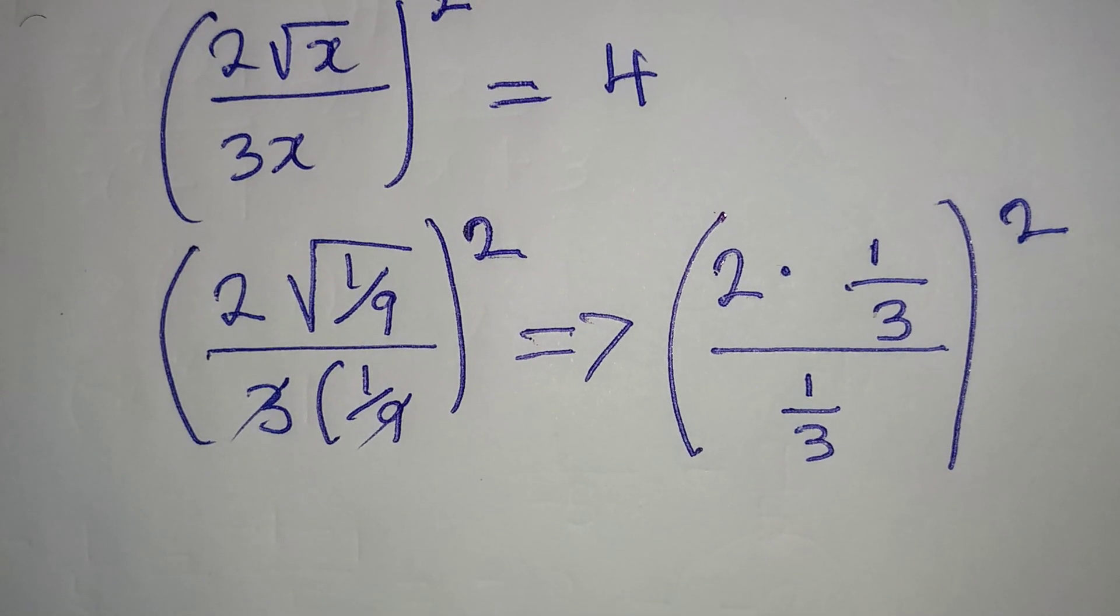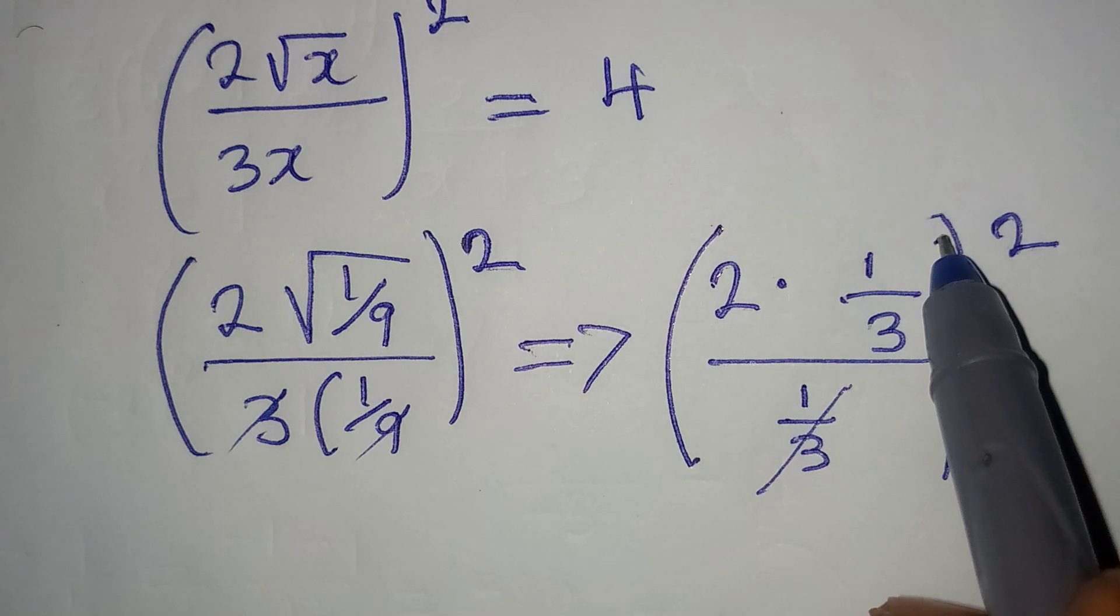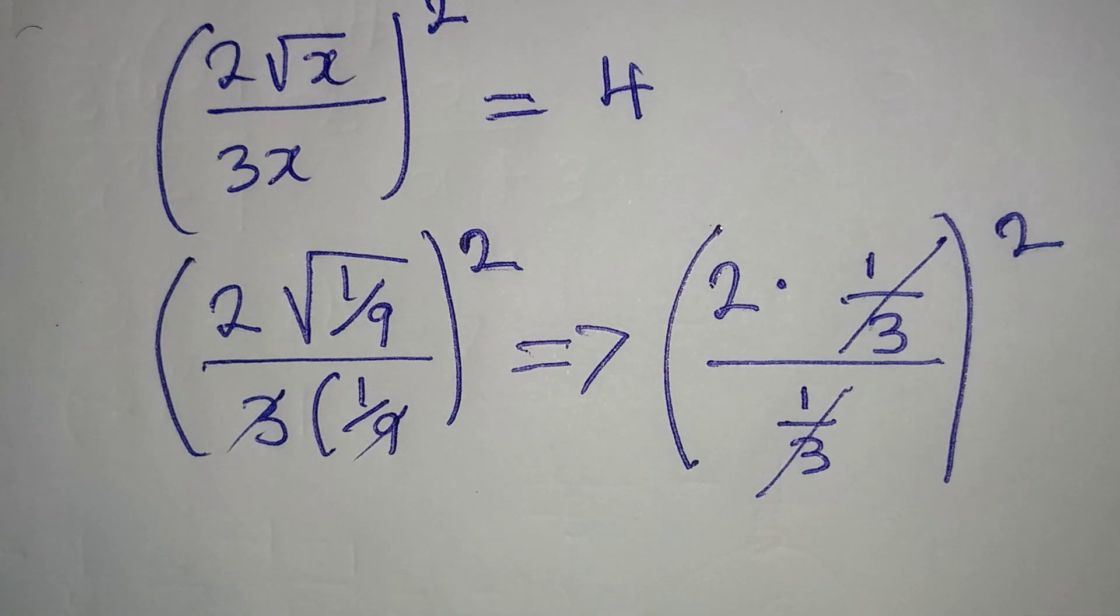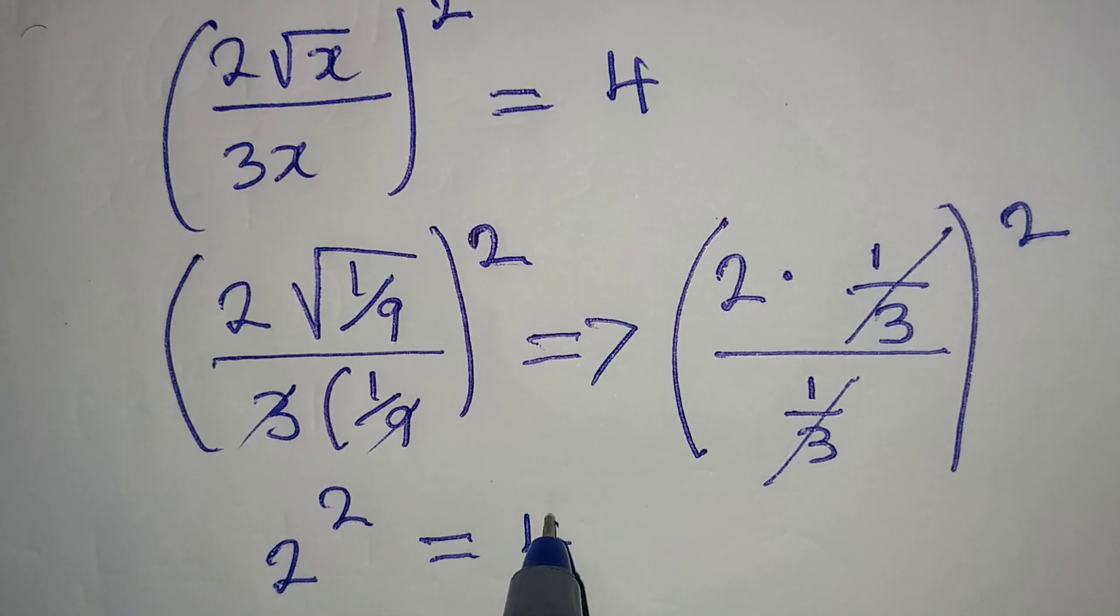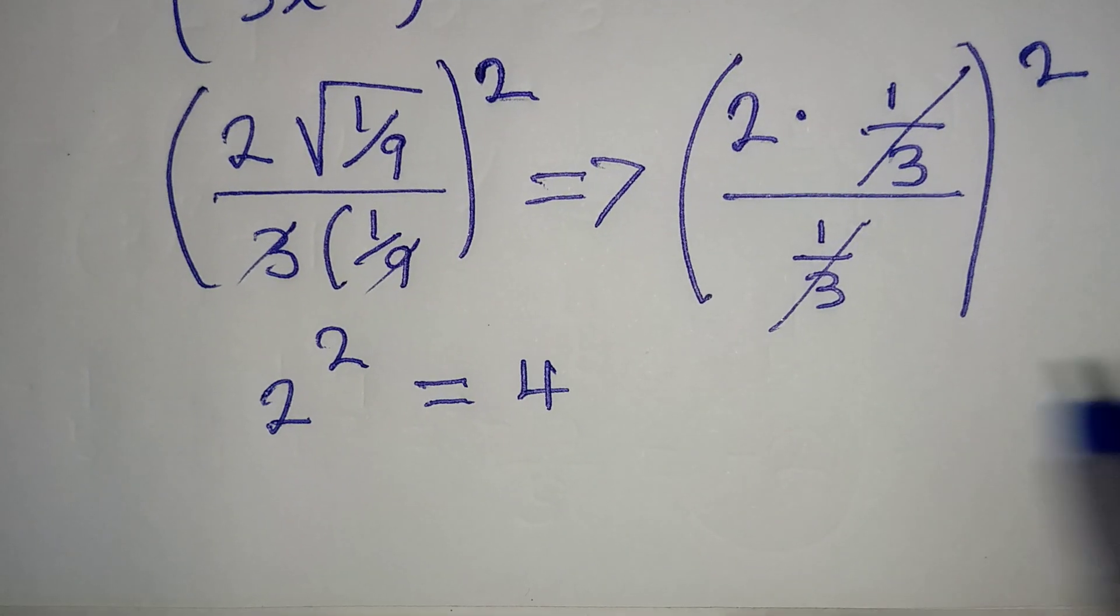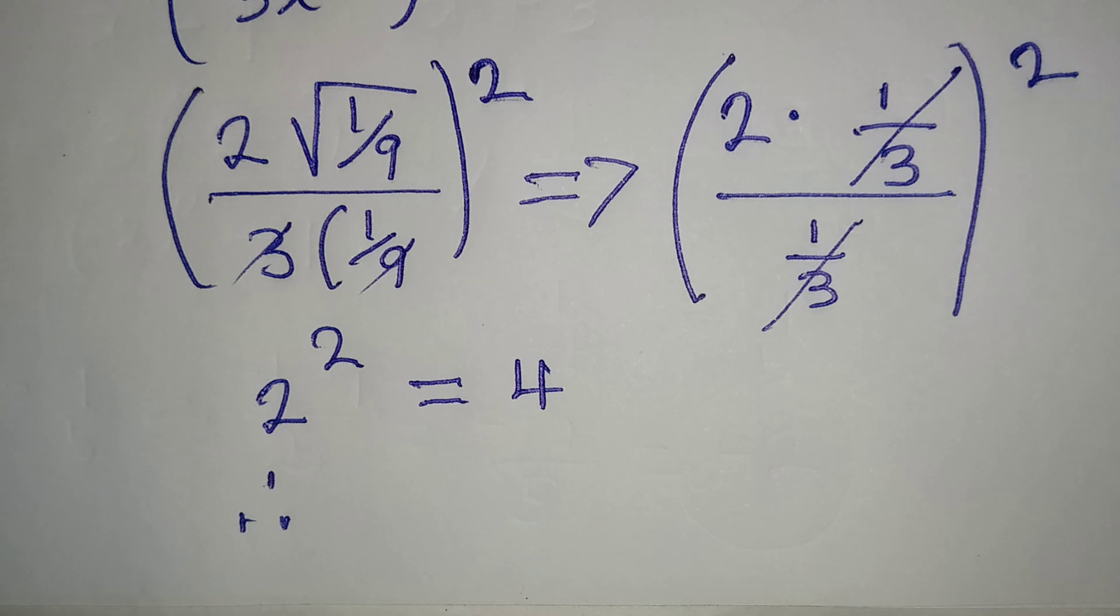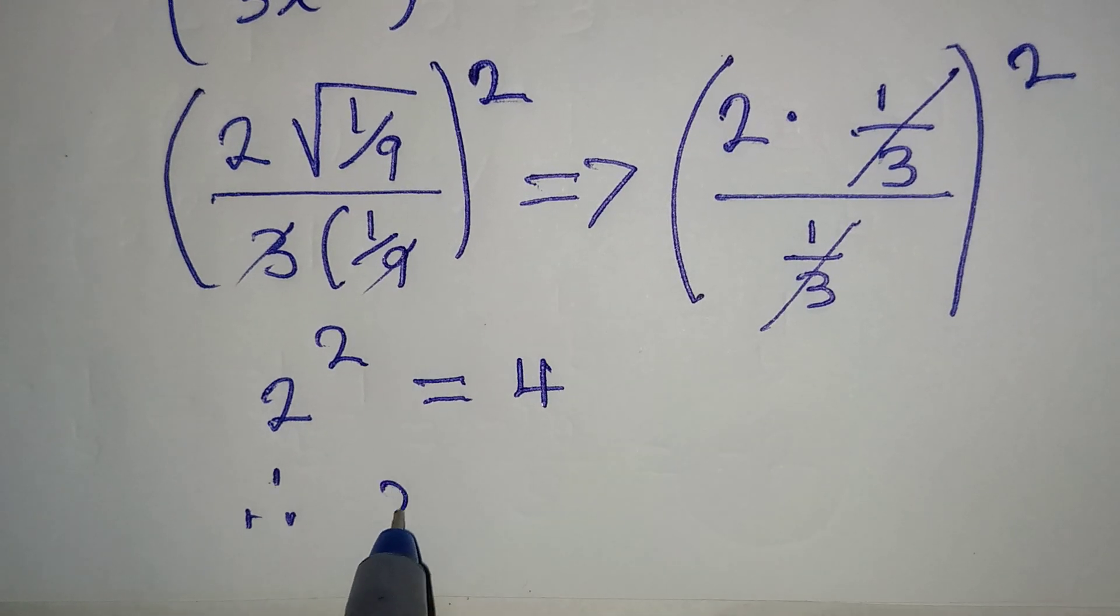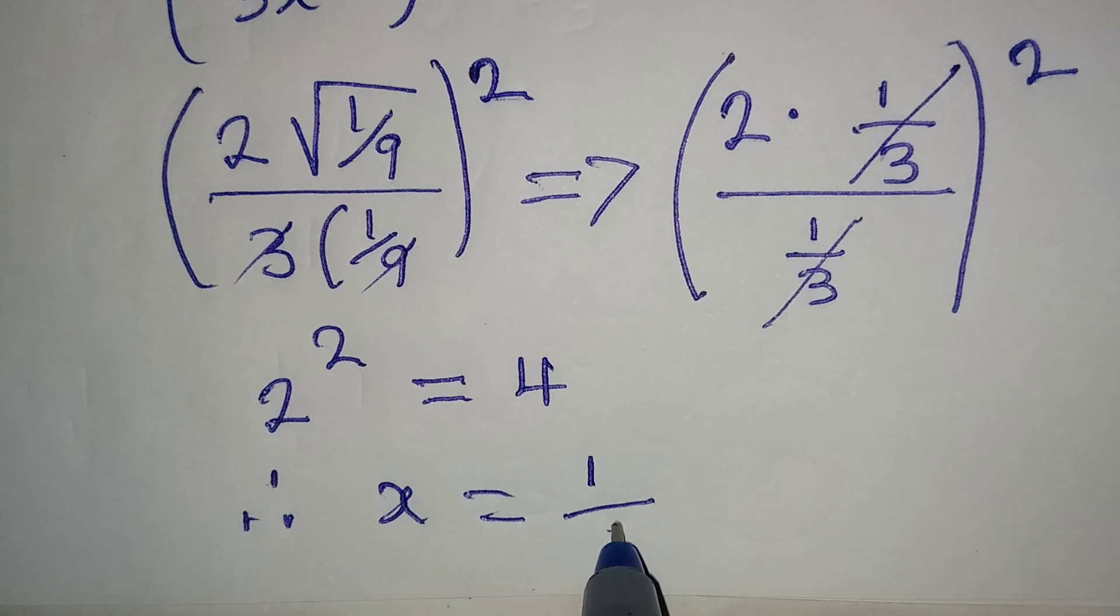And then what can we see from here? This 1/3 can cancel itself from there, and we are going to have just 2², and this is giving us 4. Therefore, the solution that satisfies the equation is x = 1/9.